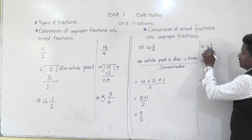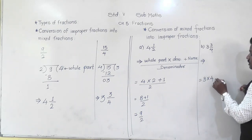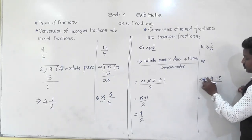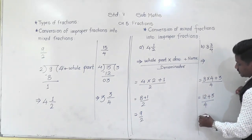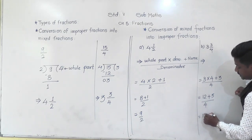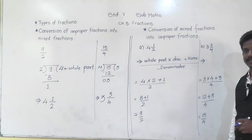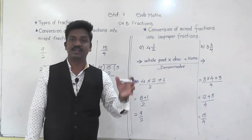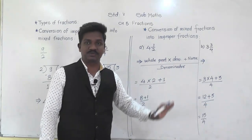Similarly for the second example, 3 whole 3 upon 4: whole part 3 multiplied by denominator 4, plus numerator 3, upon denominator 4. That is 4 threes are 12, plus 3 upon 4, so 12 plus 3 equals 15 upon 4. We get 15 upon 4. In this way we can convert improper fractions into mixed fractions and mixed fractions into improper fractions.